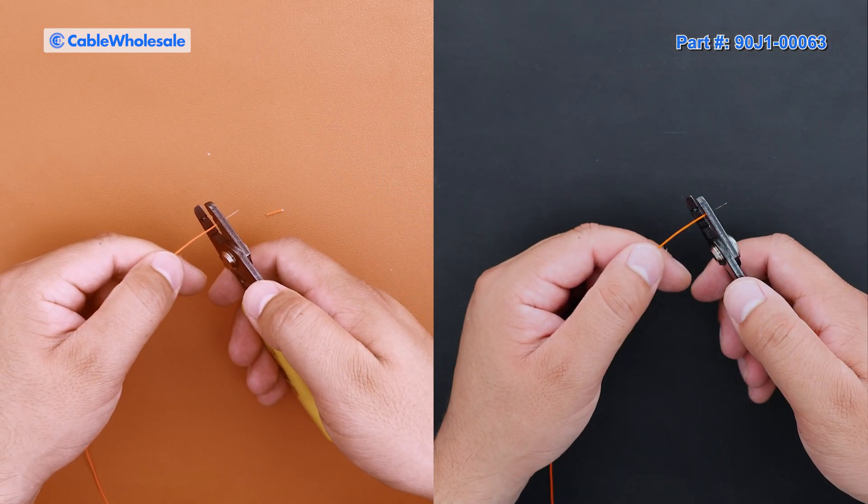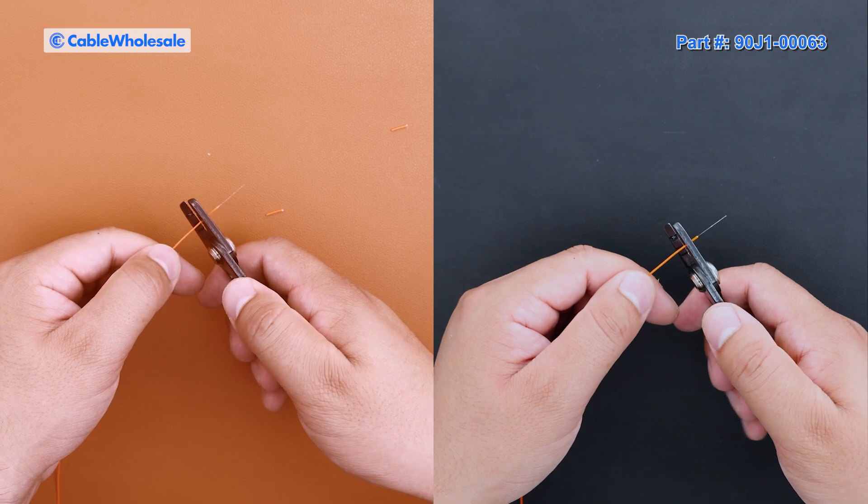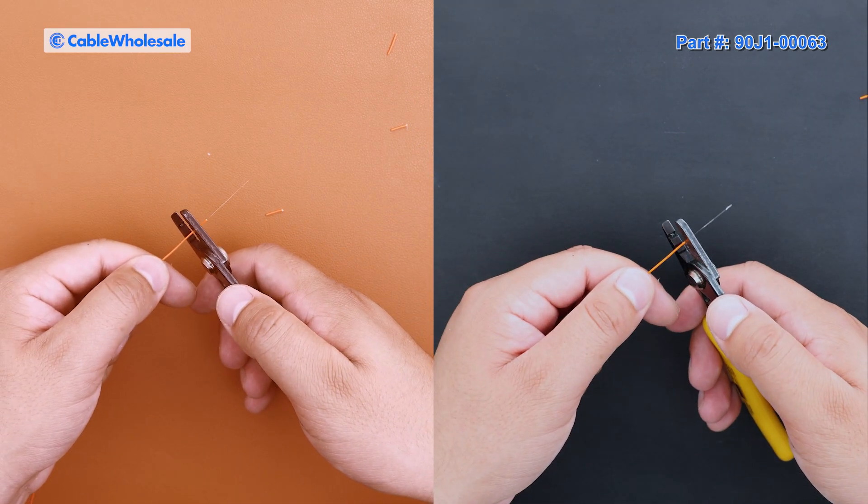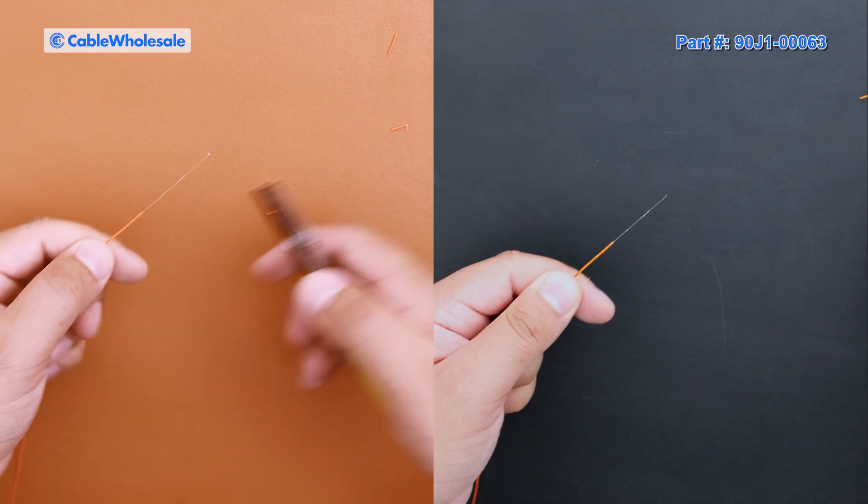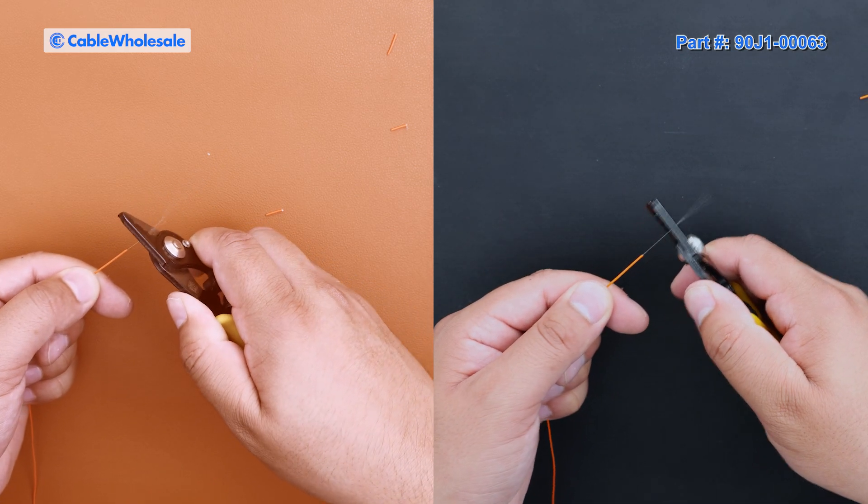Here's a good comparison. On the left side, we're using an orange work mat. Notice how much harder it is to see the bare fiber. Now on the right side, we're using the black work mat, and you can clearly see the difference. Visibility matters.